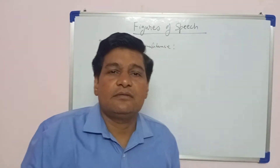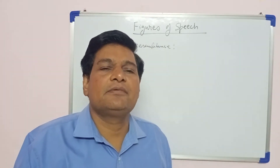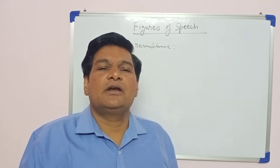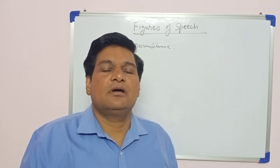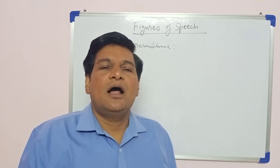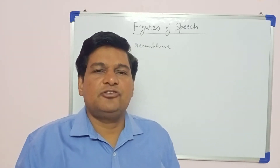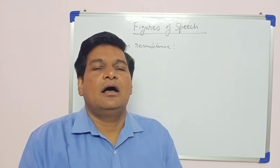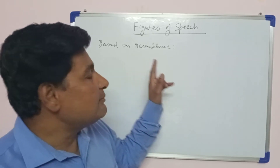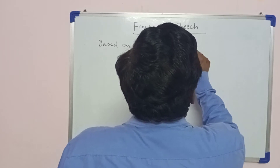In the previous class, under the head classification, we understood that figures of speech are of four types: those based on resemblance, those based on contrasting qualities, those based on construction, and those in which you get some special idea. Here we are considering those based on resemblance, and we will understand personification.